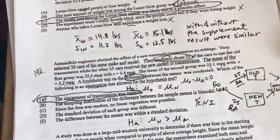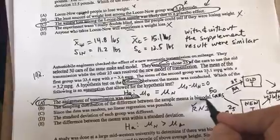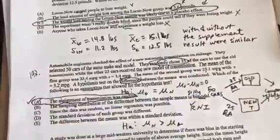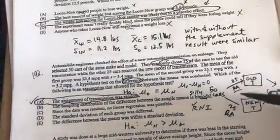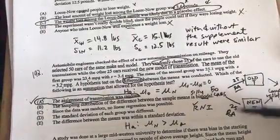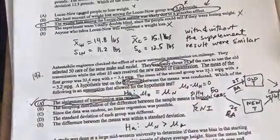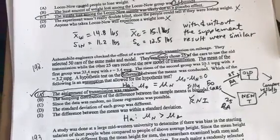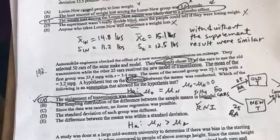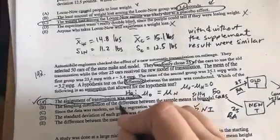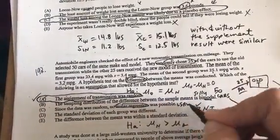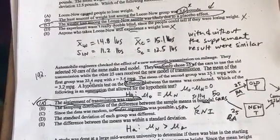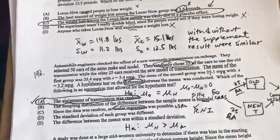The sampling distribution of the difference is bimodal. That doesn't make sense. That's kind of a silly one. One, we don't have any information to tell us the distribution. In fact, we have quite a few cars approaching 30 here, and it probably wouldn't be bimodal. The samples would actually approach approximately normal, the closer to 30 we get. Since the data was random, no linear regression, this is definitely not a least squared regression line problem. So, that doesn't make sense. It's not two quantitative pieces of data.